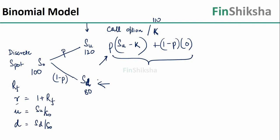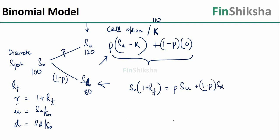What we're trying to do is arrive at the probability with which we can identify the call value using a given set of parameters. What we mean is that S₀ growing at (1 + RF), or R, should give me either Su with probability p or Sd with probability 1 minus p. Note that 1 plus RF has been replaced by R. We'll change this equation so that S₀ · R equals the expected value.